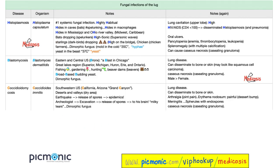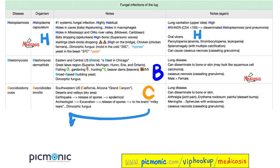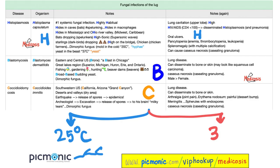Let's review. Histoplasmosis: histo hides in macrophages, in Mississippi and Ohio, and in caves with bats. Disseminated histoplasmosis is seen in HIV. Blastomycosis has broad-based budding yeast — think blast in Chicago, and remember the beaver dams. Coccidioidomycosis: think California and the Grand Canyon area, southwest United States — the earthquake scenario and the archaeologist scenario. These are all dimorphic fungi: mold in the cold, yeast in the beast — meaning mold at cold temperatures with hyphae, but yeast at warm temperatures.